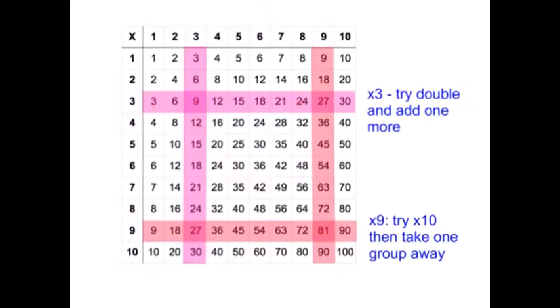7 times 3 is 7 times 2, which is 14, plus one more 7 is 21.